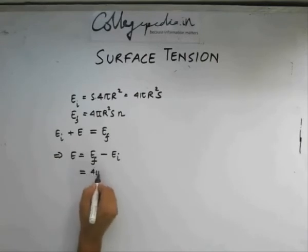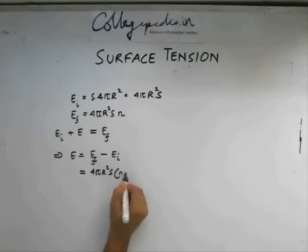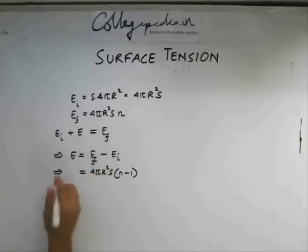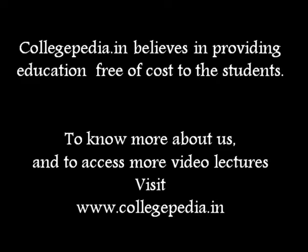This equals 4 pi r square s, which comes out common, times n minus 1. So this is basically the change in energy or the energy required. Let us say I write it as E required to do this operation. So this is the change of energy.